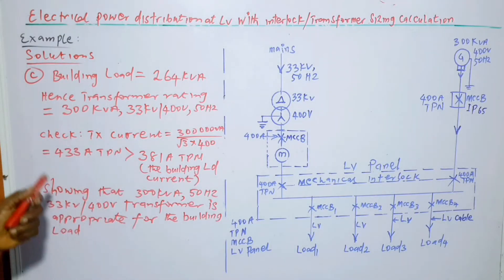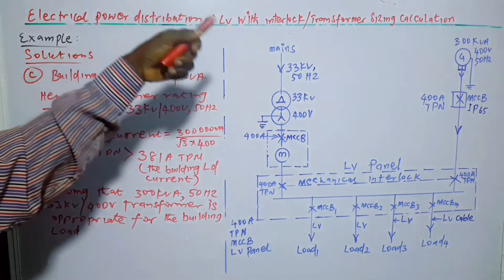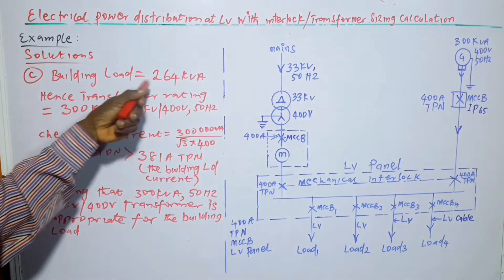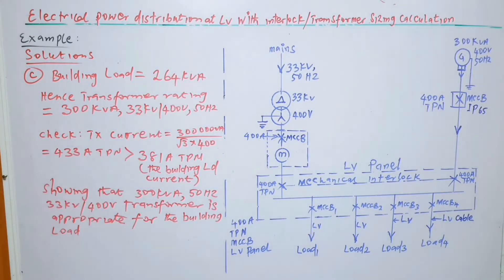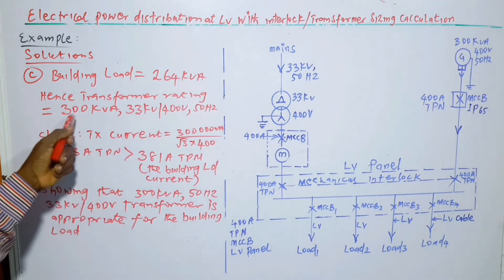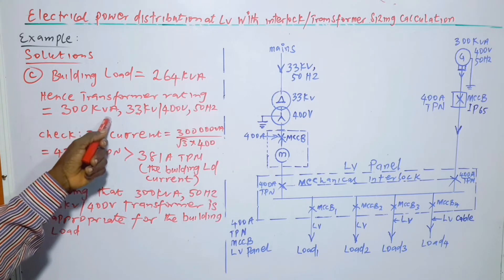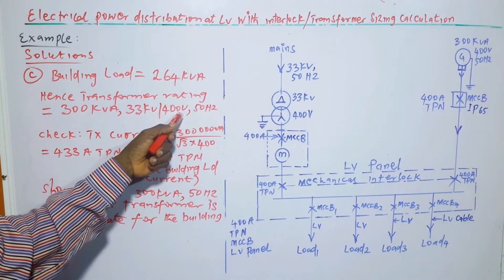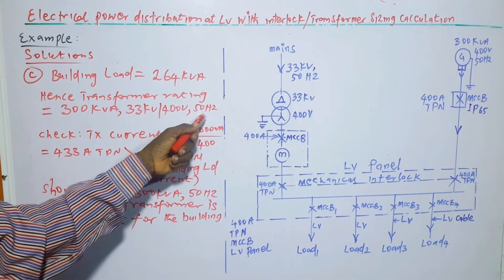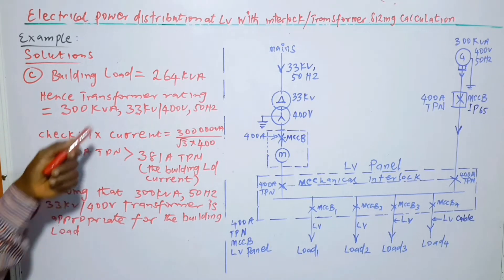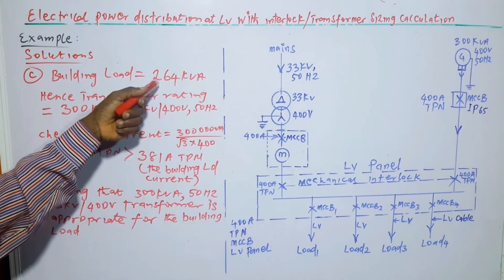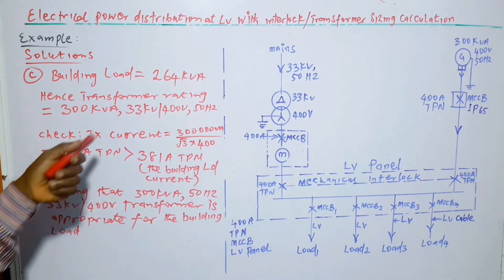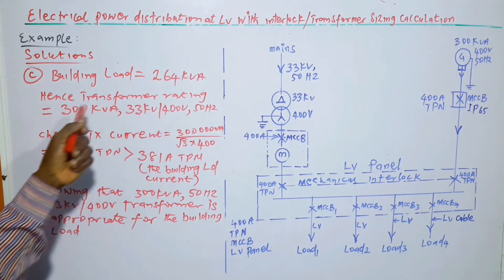Moving on, C part. To calculate the transformer rating, building load is 264 kVA. Hence, transformer rating is equal to 300 kVA, 33 kV slash 400 volts at 50 hertz. We choose the transformer rating that is higher than the building load. The next one is 300 kVA.